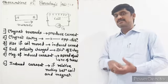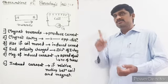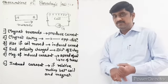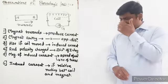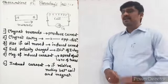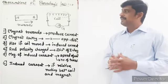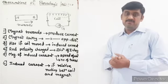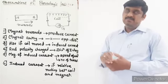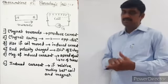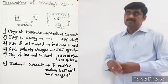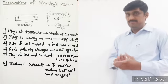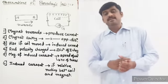The value of the induced current is shown in the galvanometer. The central alignment of the galvanometer is zero. When the magnet is moving towards the coil, the direction of the induced current is to the left.